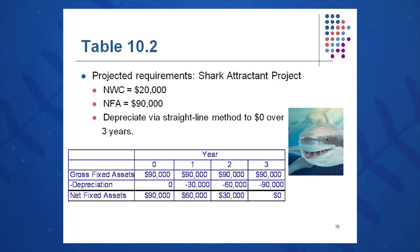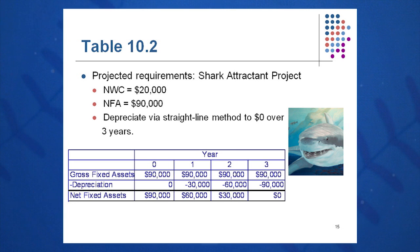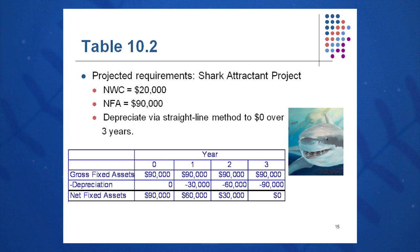We also need to look at net working capital, which will be negative $20,000 at time zero to start this project — current assets less current liabilities. Net fixed assets: we'll build a little balance sheet like Table 10.2, which shows gross fixed assets of $90,000 each year. The accumulating depreciation is $30,000 at end of year one, $60,000 at end of year two, and $90,000 by end of year three. Your net fixed assets go down from $90,000 today to zero by the end of year three.